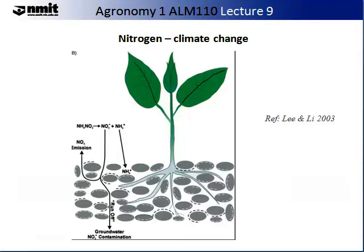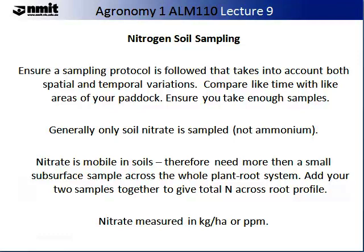Farming in future generations will require a better understanding of your ecosystems — not only your soils and plants, but how your gaseous emissions interact too. When sampling for nitrogen, ensure your protocol takes into account both spatial and temporal variations. Compare like time with like areas of your paddock and ensure you take enough samples. Generally, only soil nitrate is sampled, not ammonium. Nitrate is mobile in soils, so taking only a small subsurface sample will not give you a true or accurate indication of your nitrate levels.